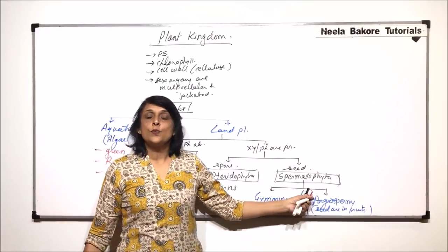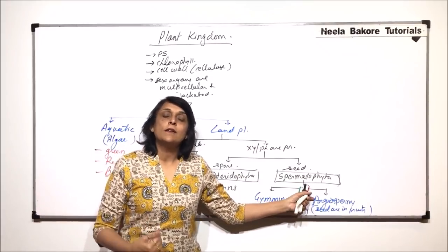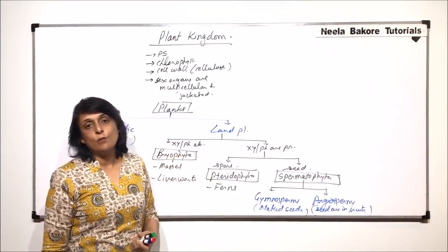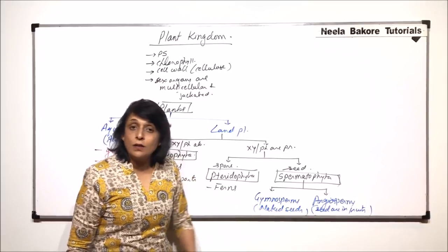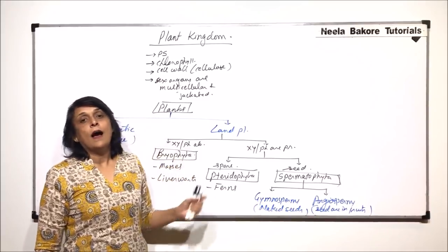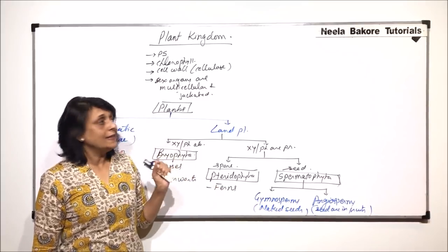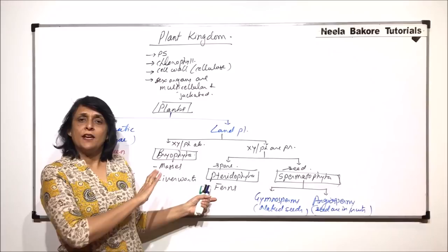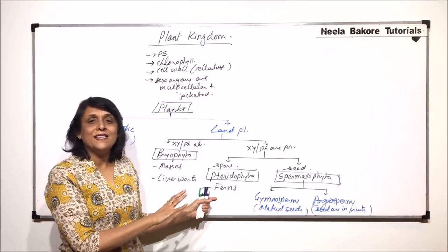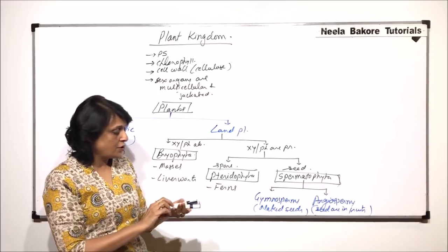Angiosperm is further divided into dicot and monocot depending upon how many cotyledons are there in the seeds. So this is a very basic classification.